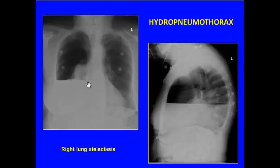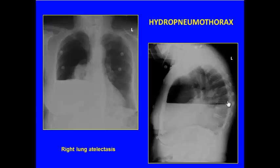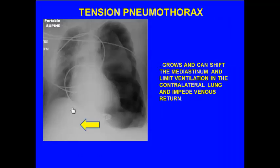Sometimes we'll actually have a large pleural effusion with a pneumothorax. Here we're seeing some collapse or atelectasis of the right lung, and this large air-fluid level is fluid within the pleural space. A hydropneumothorax is what we're seeing here — a long fluid level tracking across the entire hemithorax.